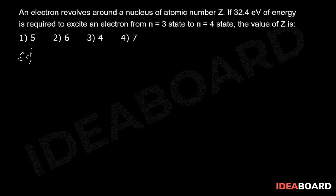Students, here energy required to move the electron from lower energy level n₁ to higher energy level n₂: ΔE = 13.6 Z² × (1/n₁² - 1/n₂²). Here given that energy